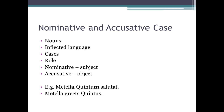First of all, nouns are people, places and things. Examples of which include Metella, Caecilius and Mercator. Latin is what's known as an inflected language. This means that the ends of Latin words change, which also changes the meaning.